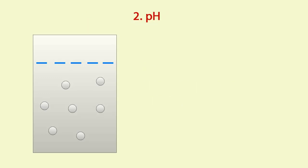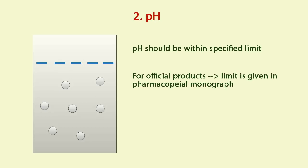pH. pH of emulsion should be within specified limit. For official product pH limit is specified in Pharmacopeia. For non-official product pH limit is decided in pre-formulation stage.